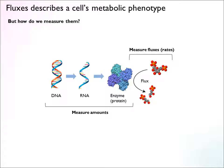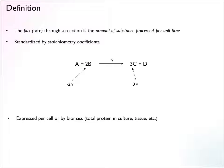But it creates some problems because measuring rates and fluxes is really not that easy. So first, a more careful definition of a flux. A flux through a reaction is the amount of substance that the reaction processes per unit time. Typically for cellular metabolism we use units like femtomolar amounts per cell per hour — some kind of measure of amount per unit time.